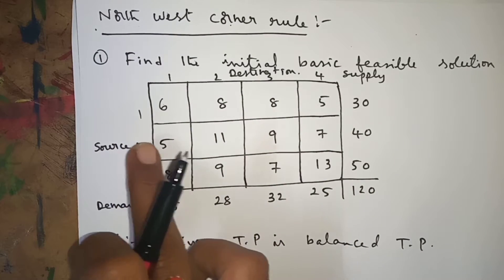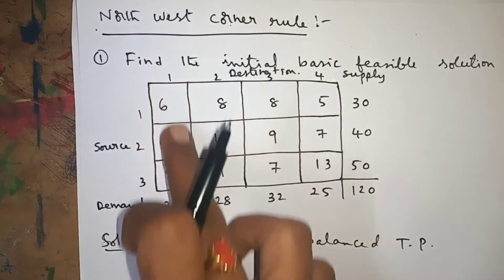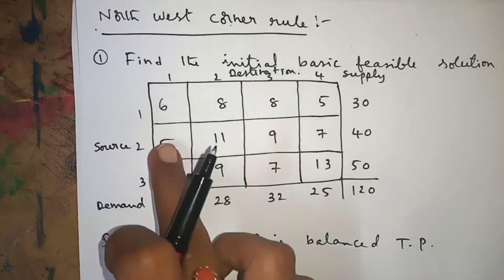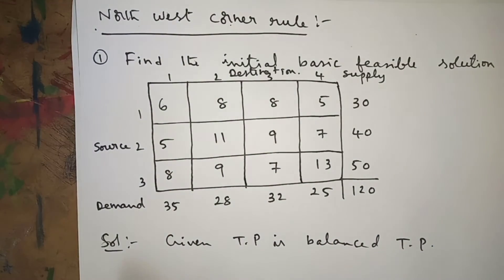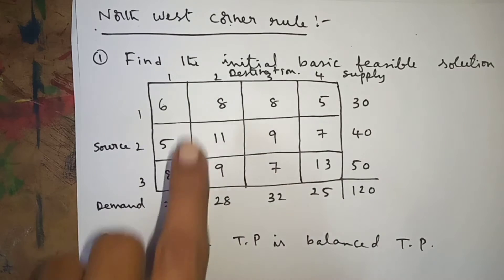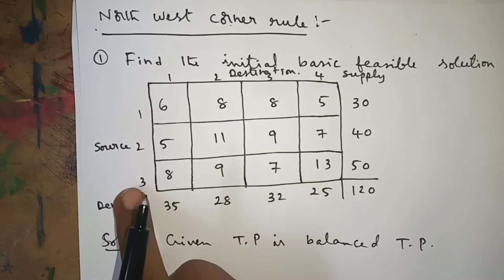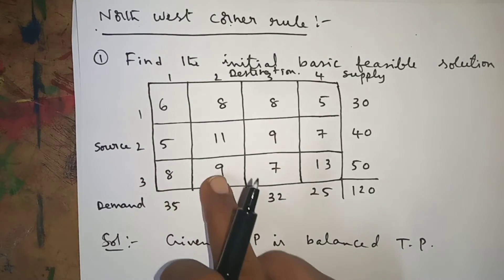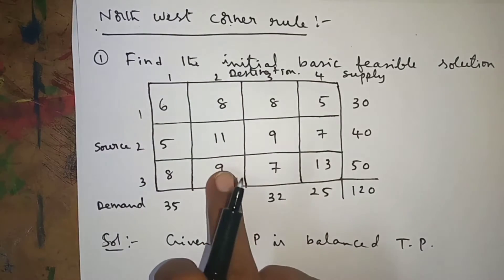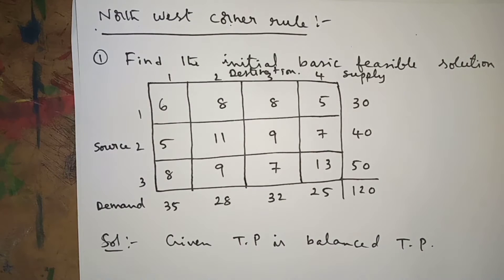These are the cost matrix elements. From source 2 to destination 1, it will take 5 — that may be five rupees, five hundred rupees, or five thousand rupees, whatever depends on the problem. This element is from the third source to the second destination, which costs 9.